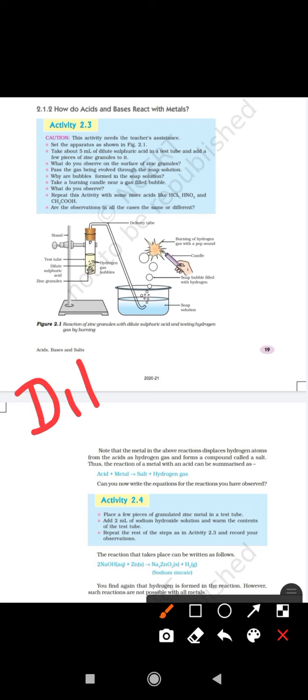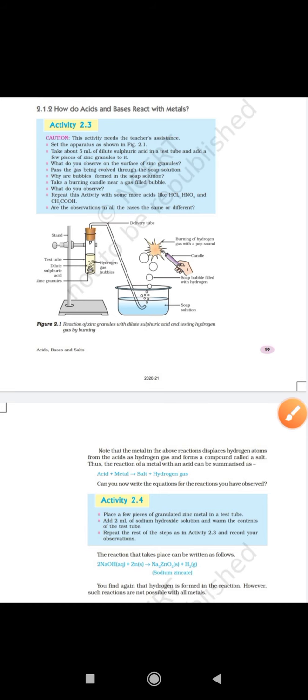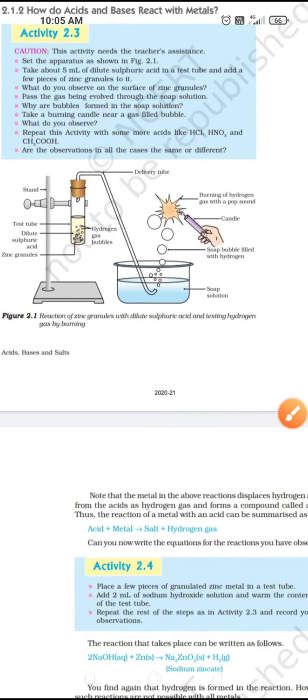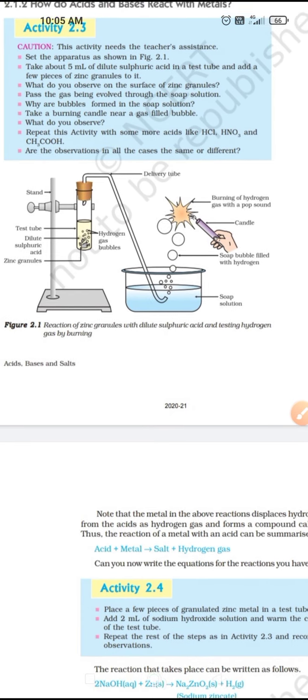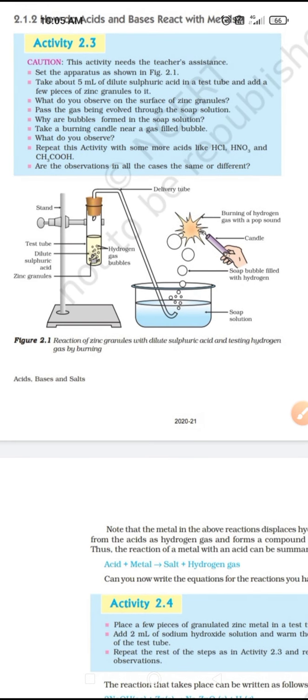Dilute sulfuric acid means we have added a little quantity of sulfuric acid to the water to lower down its strength, or we can say we have used weak sulfuric acid. Now we will try to understand the activity with the help of this diagram. Look at the diagram carefully.